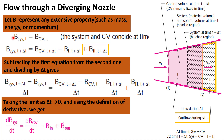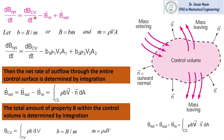We subtract the first equation from the second equation and divide by delta t. In the next step we take the limit as delta t approaches zero, and by using the definition of the derivative we get the equation in this form. Here B is the extensive property of a system.